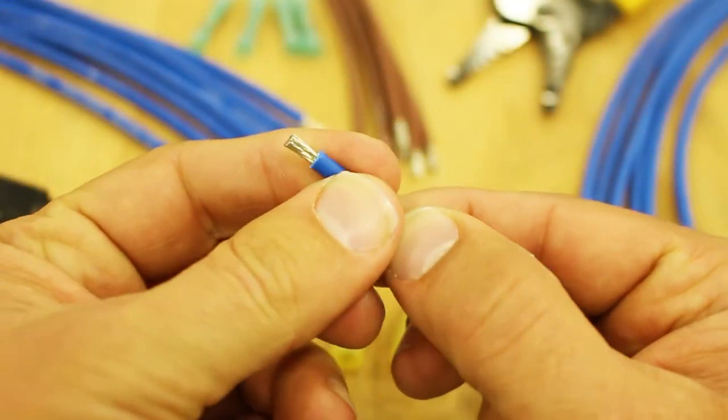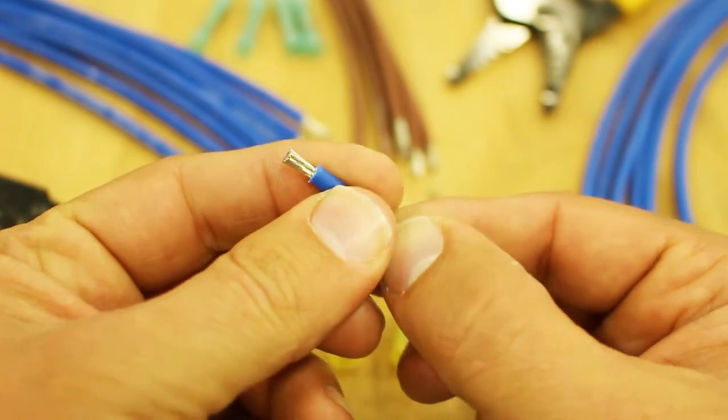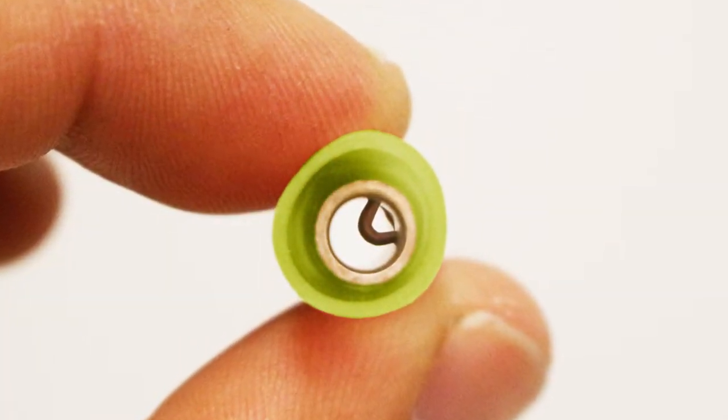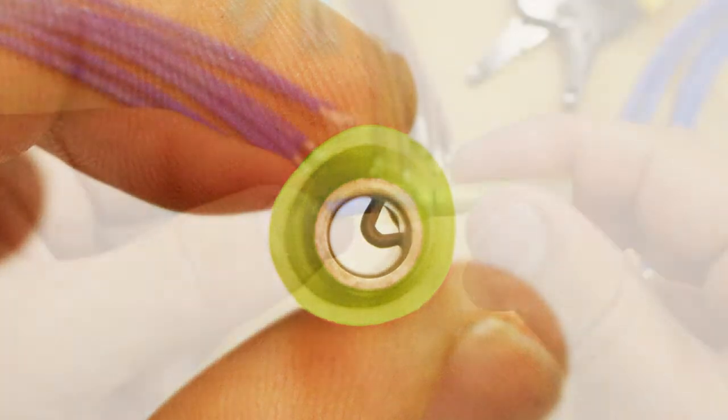The first step is to make sure that you have correctly stripped the wires to the proper length. If you look inside the butt splice, you will see an indentation. Make sure your wires butt up against that.